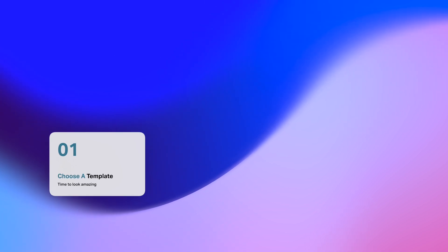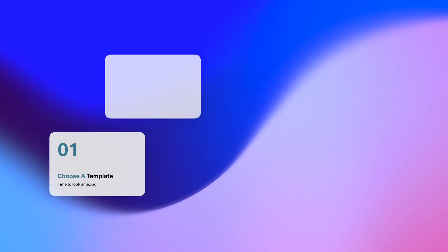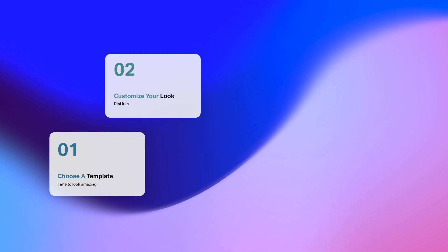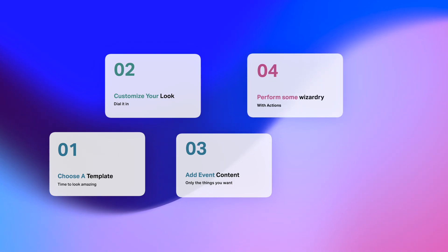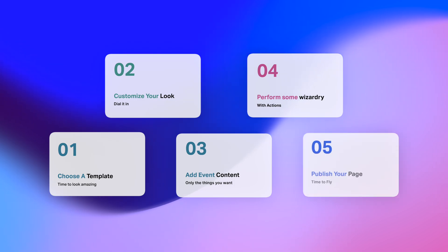First, choose a registration page template which you can modify in any way you like. Next, customize the look and branding of your registration page. Then, add important content and information about your event. Of course, perform some Harry Potter wizardry with conditional logic actions. And finally, preview your registration page and move toward publishing and going live.